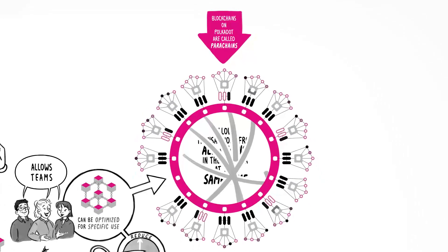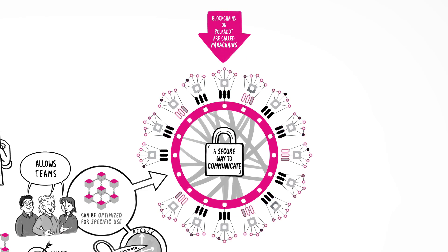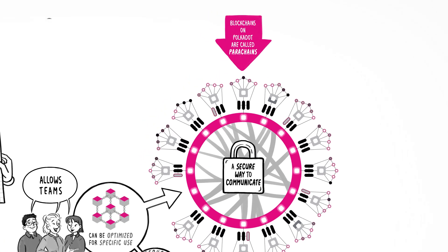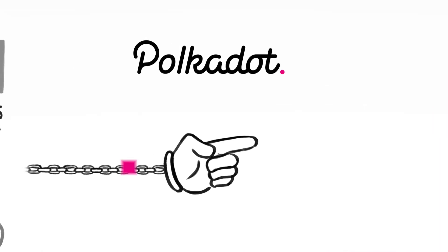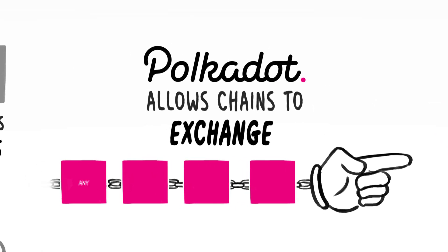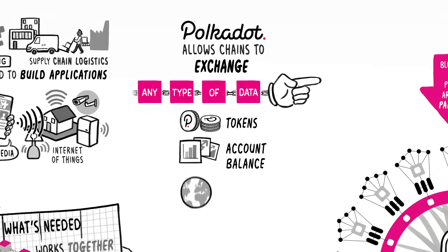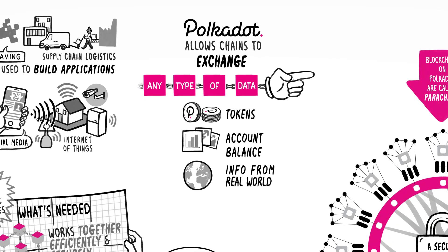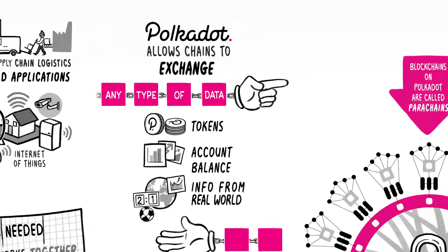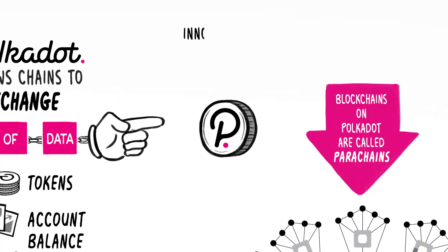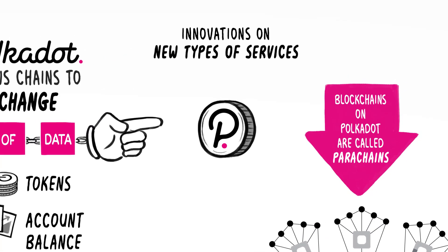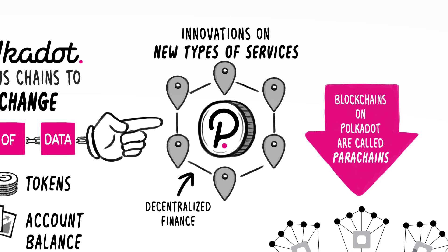The relay chain also provides a secure way for chains to communicate with each other. Polkadot's cross-chain messaging scheme allows chains to exchange any type of data. For example, a token, an account balance, or even information from the real world, like a stock price or the final score of a sporting event. This interoperability promotes innovation on new types of services that leverage the specific capabilities of different chains, for example, for decentralized finance applications.